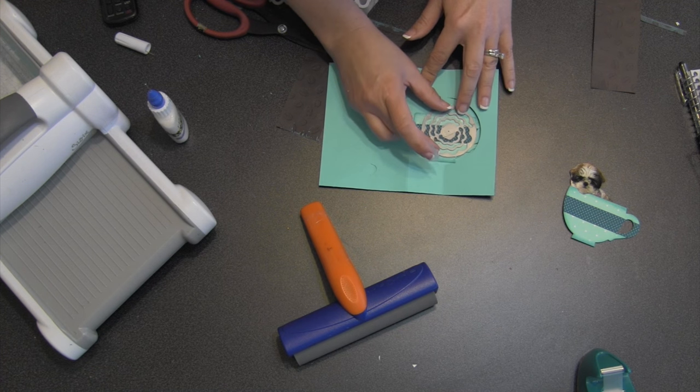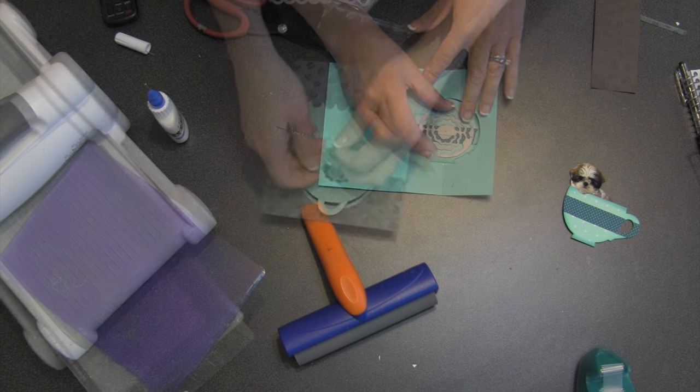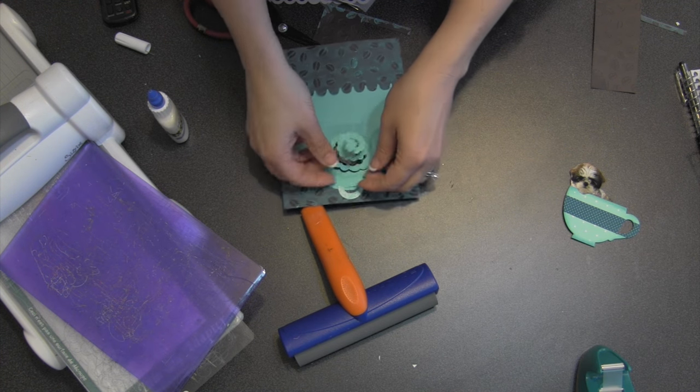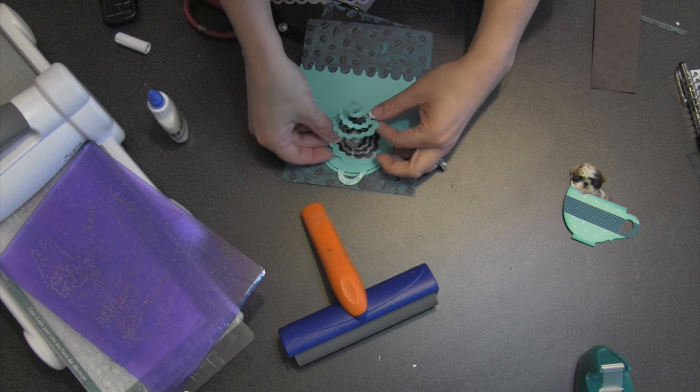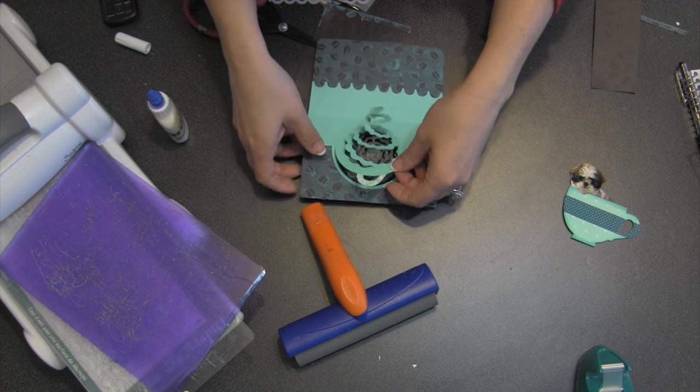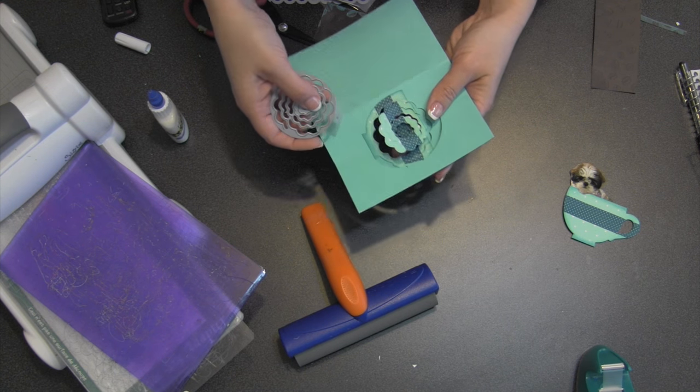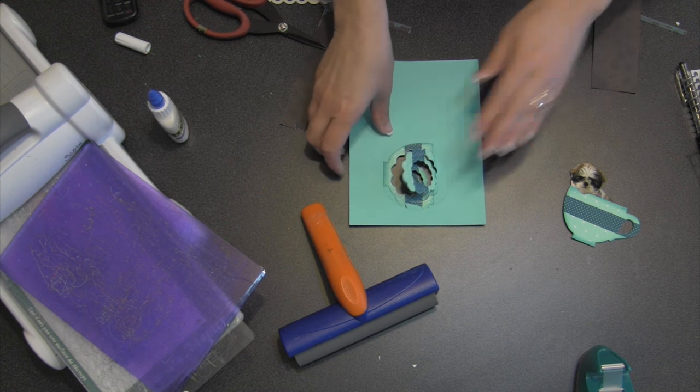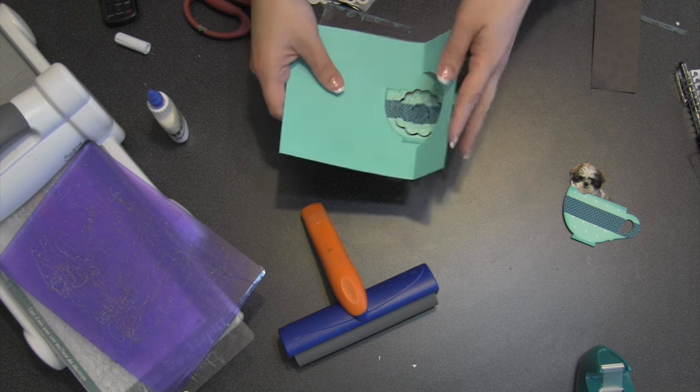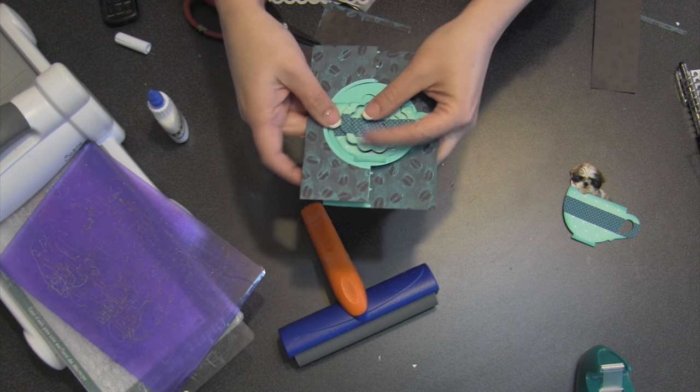Since I was die cutting through several layers, I did roll it back through the machine a couple times to make sure I got good pressure against that spiral. And now I'm just going to carefully lift it off the die, making sure it die cut all the way through, which it did. And now I've got that beautiful spiral cut into my front coffee cup. And in the closed position, the spiral is going to be closed so it will look like a complete cup.